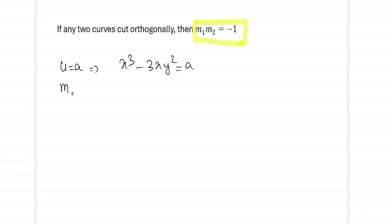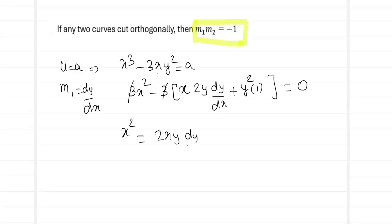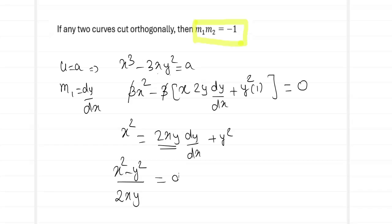Differentiating x³ − 3xy² = a with respect to x: 3x² − 3(2xy dy/dx + y²) = 0. Dividing by 3 and rearranging: x² − y² = 2xy dy/dx. Therefore m1 = dy/dx = (x² − y²) / (2xy).